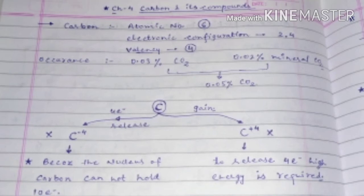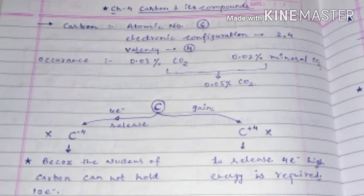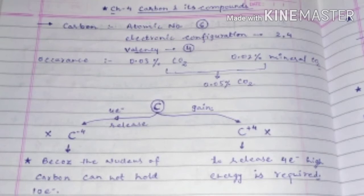From the electronic configuration we can understand the valency of carbon, that is four. Now we will discuss about the occurrence of carbon in the atmosphere. It is present 0.03 percent in the form of carbon dioxide, while in the mineral form it is present 0.02 percent, and the total carbon present in the earth's crust is 0.05 percent.